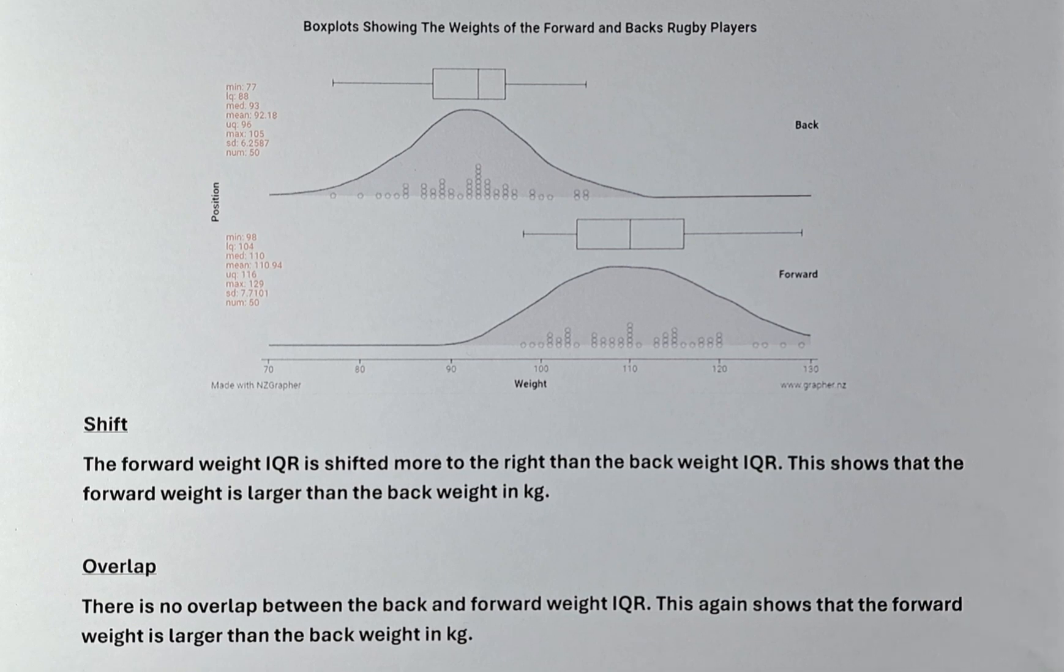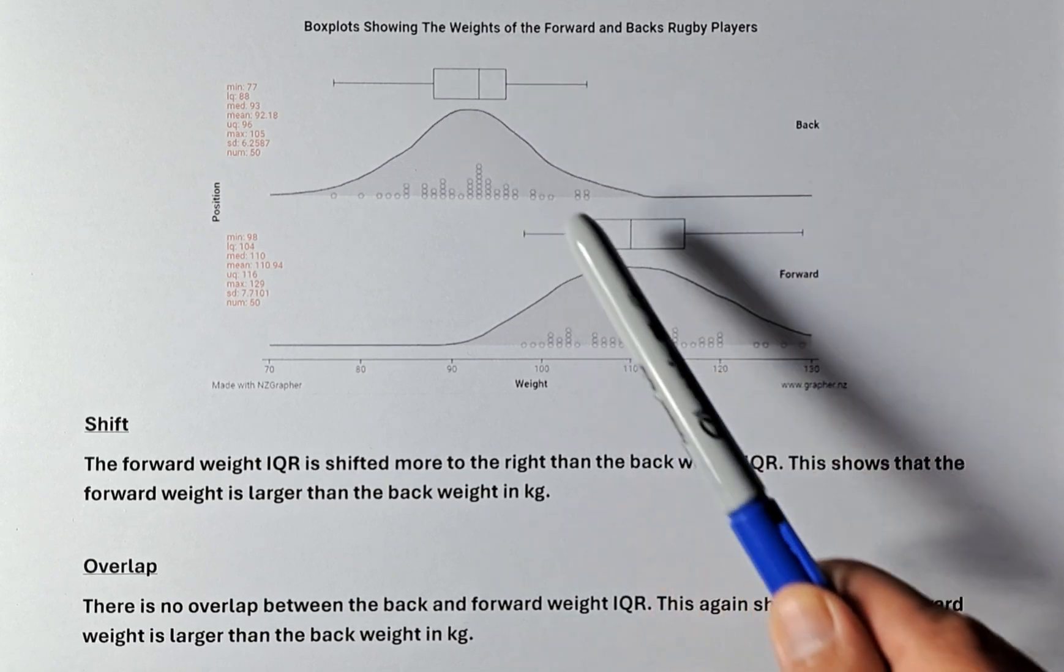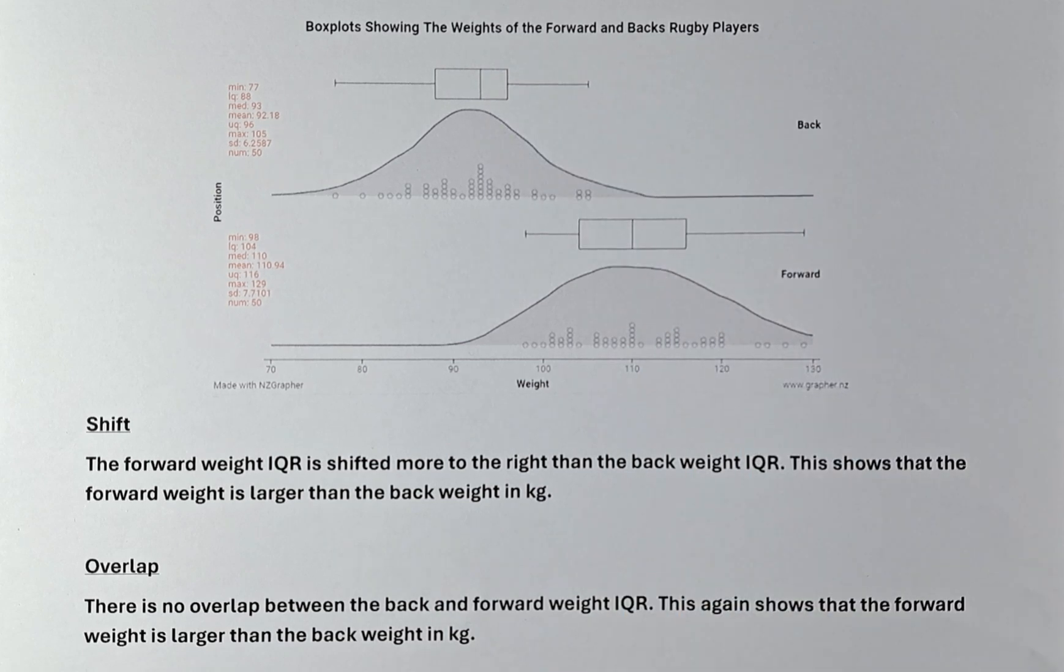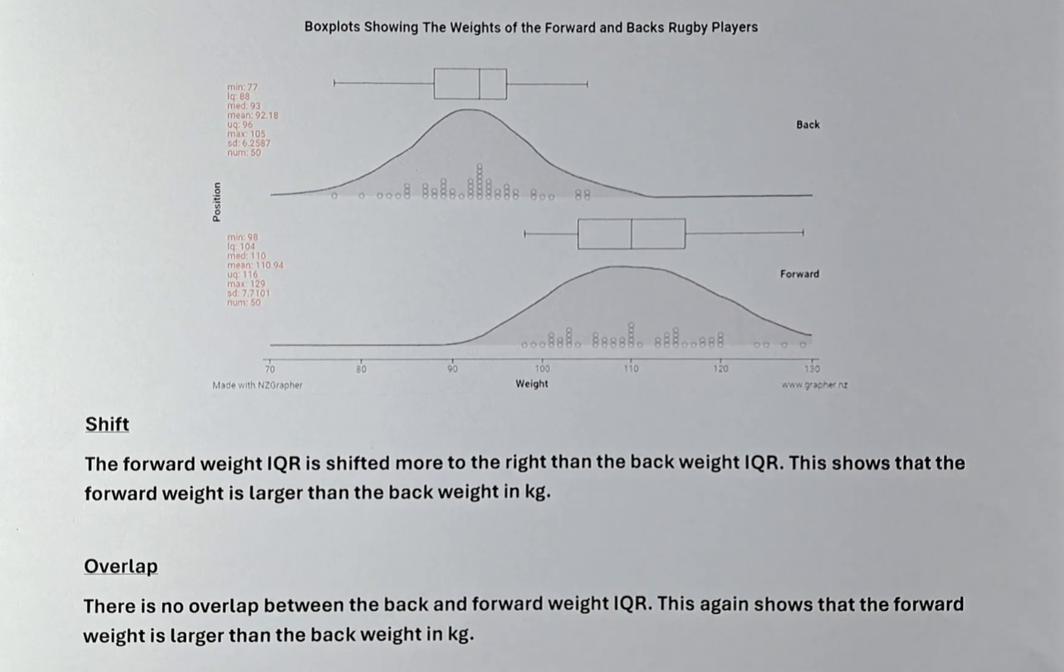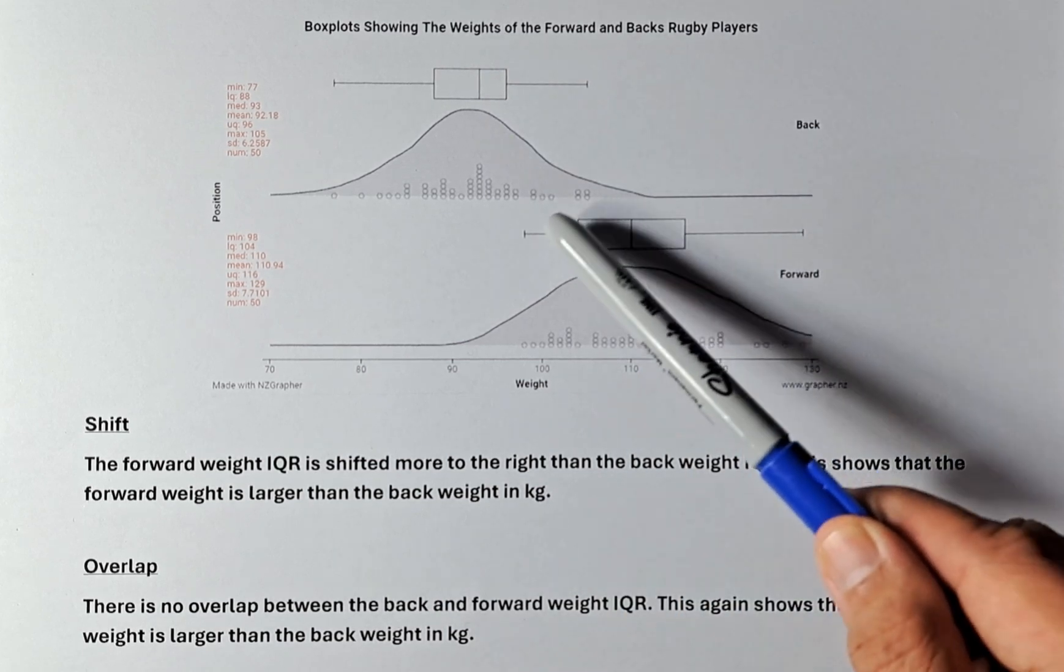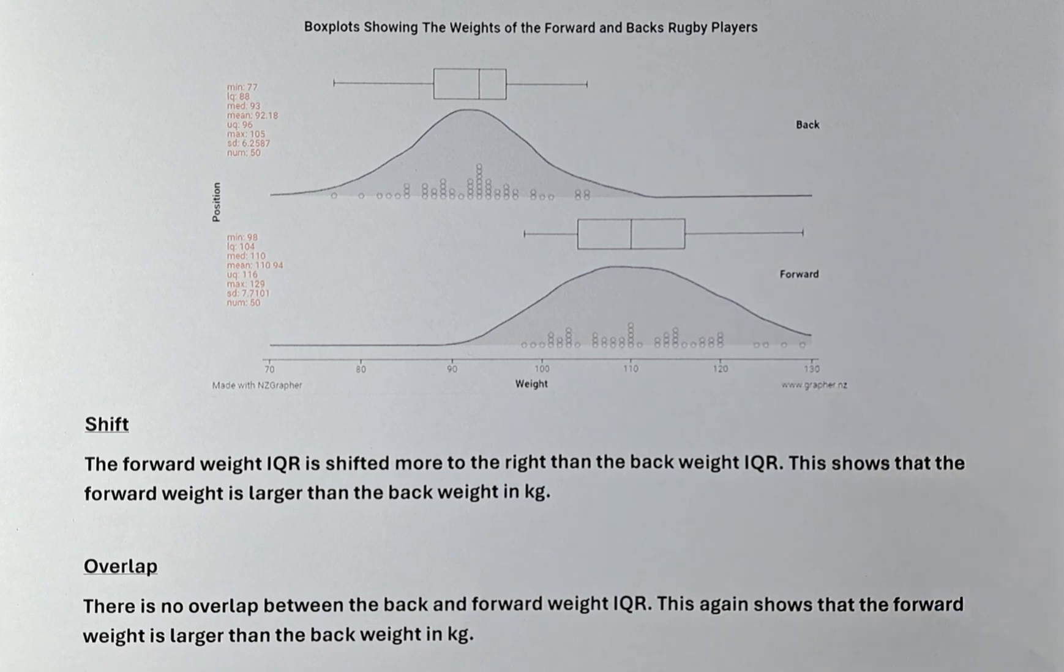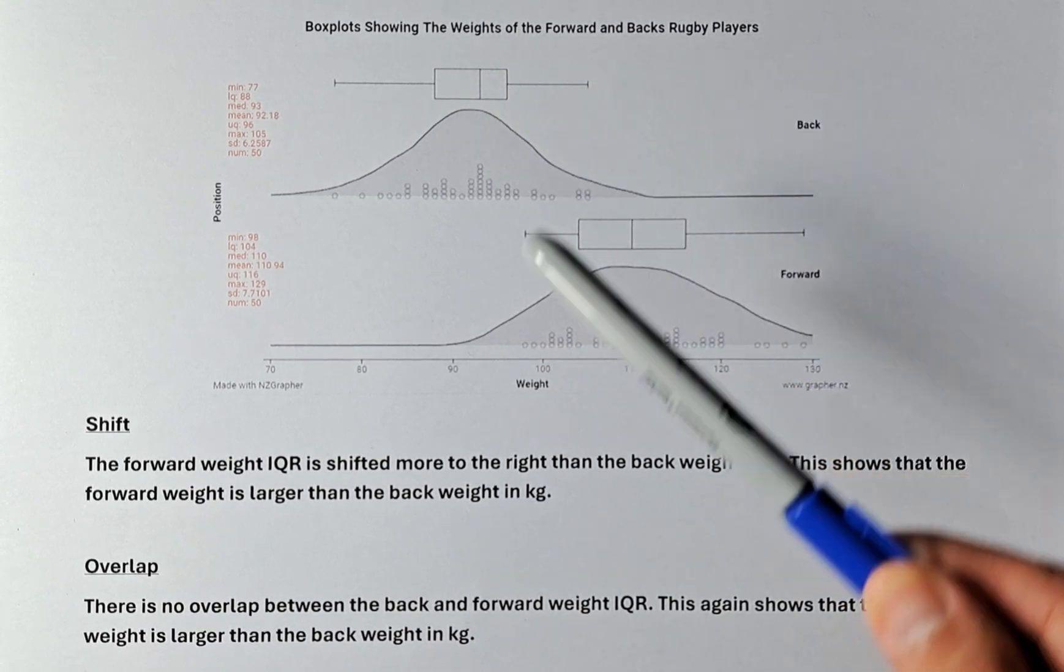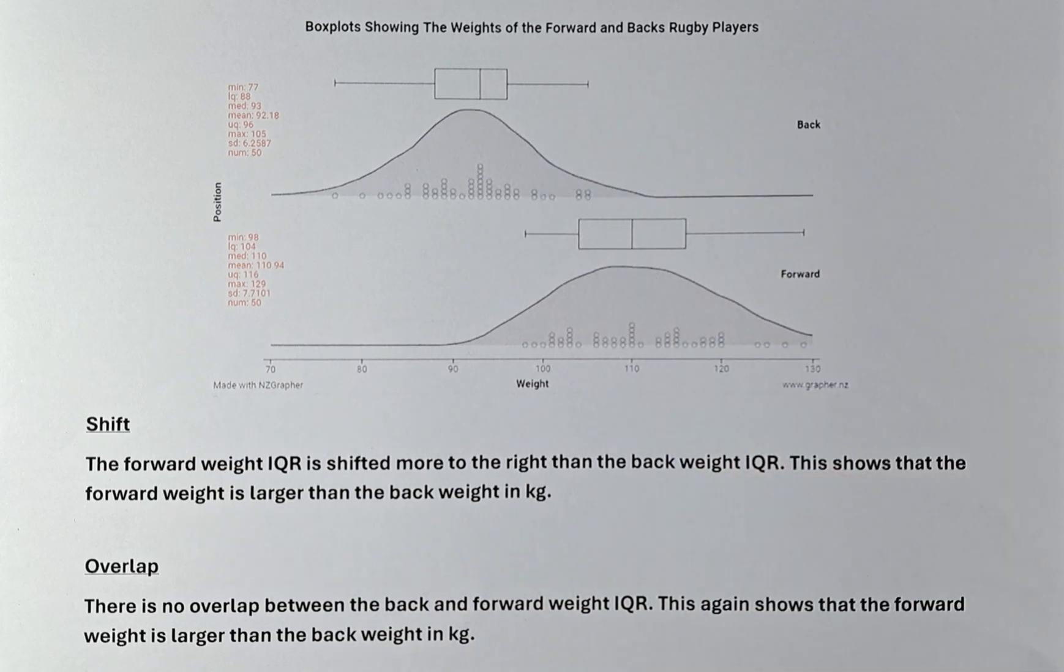To talk about the shift, we look at the box there. Which one is more to the right? We can see that the forward is more to the right than the back. So, we are going to write the forward weight IQR is shifted more to the right than the back weight IQR. This is more to the right than the back.